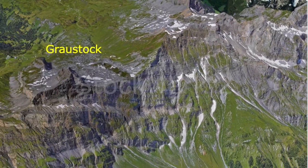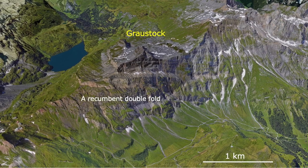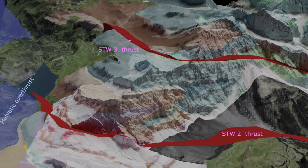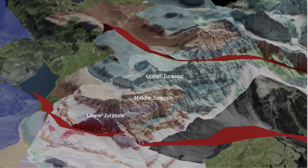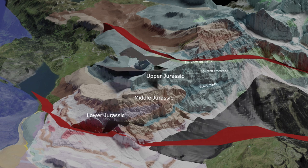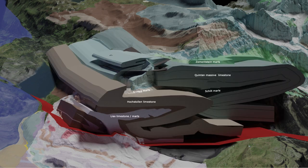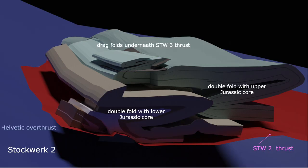Thrust sheet Stockwerk II deformed into a large double fold, both at the Middle Jurassic and Upper Jurassic limestone level. The deformation of the Upper Jurassic Quinten limestone was disharmonic, causing it to dislocate across the Erzeg shale marl. The Graustock core contains Lower Jurassic rocks, indicating that it is detached within the Lower Jurassic substrate. Mount Graustock is composed of a couple of tight drag folds that represent the ramp along which the Graustock recumbent fold terminates, also the location where the St. Niklaus thrust sheet broke off and dislocated towards the north.